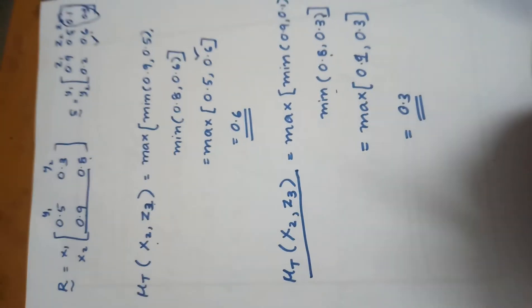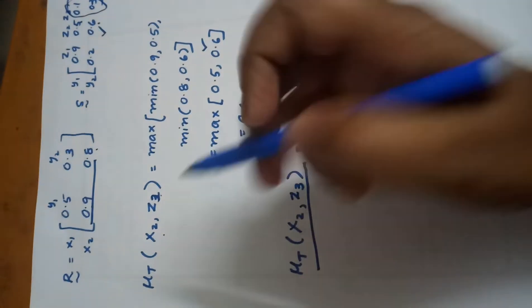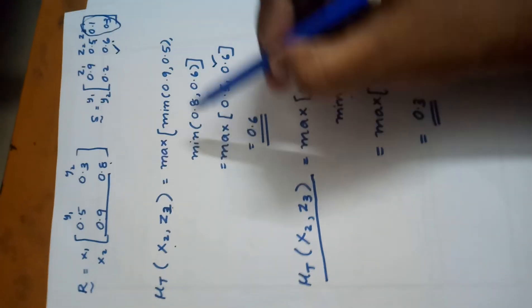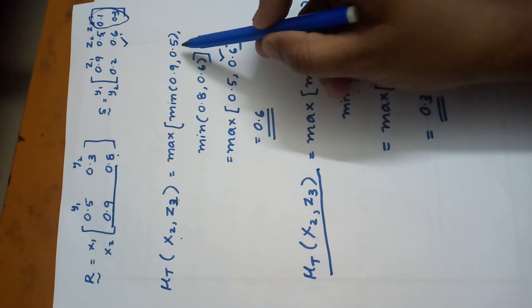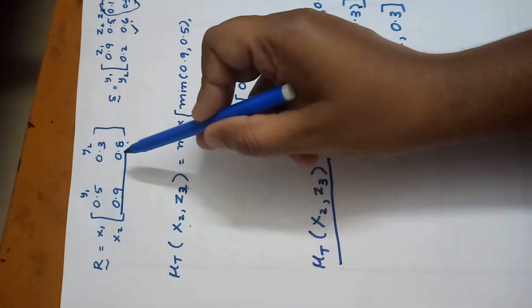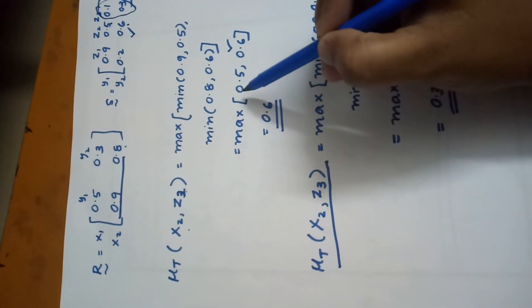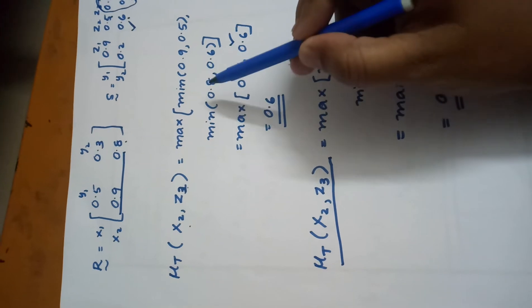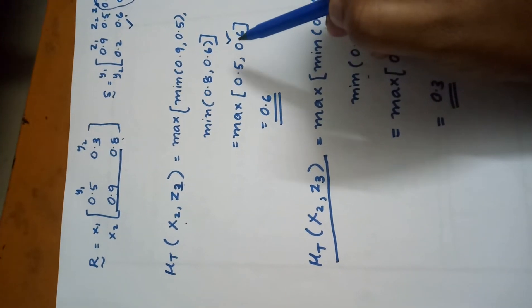Similarly, we find μT(x2, z2), that is second row and second column elements. That equals max of [min(0.9, 0.5), min(0.8, 0.6)]. Minimum of 0.9 and 0.5 is 0.5, minimum of 0.8 and 0.6 is 0.6. Therefore max of 0.5 and 0.6 equals 0.6.